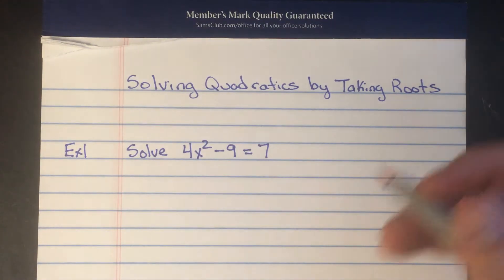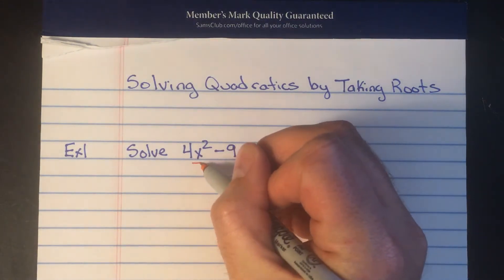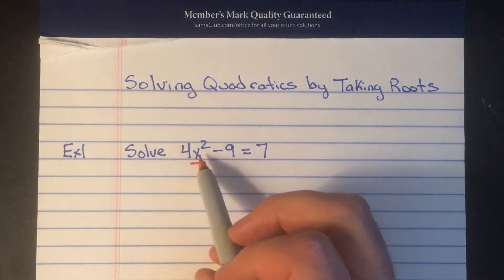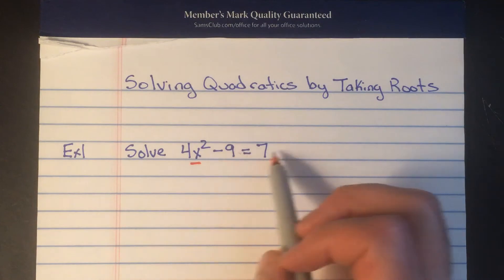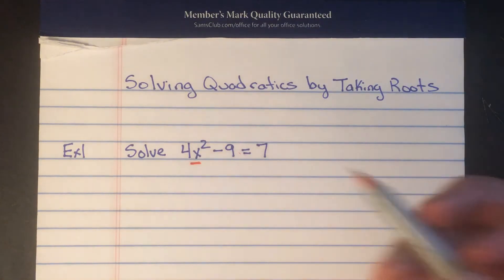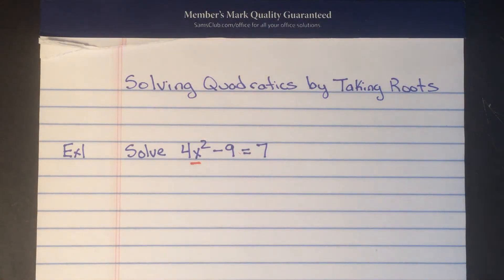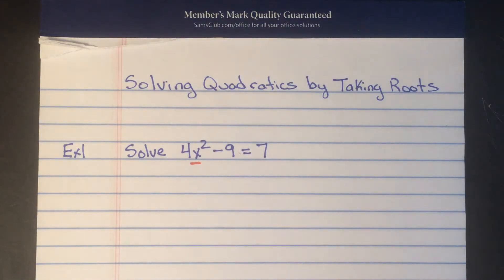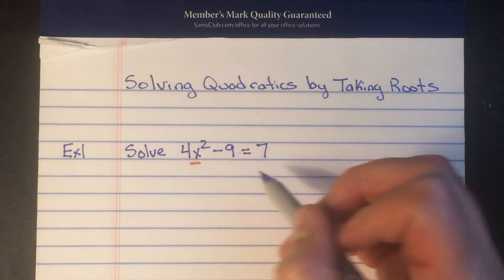Today we're not going to need to factor to solve these quadratics. This method will work if there's only an x squared term in the problem but no single x term. So you notice there's 4x squared but there's no 9x or 7x, there's just an x squared. So a couple things remember, we're trying to get x by itself using our old solving method and we can do that because there's only an x in one spot, there's not an x somewhere else.